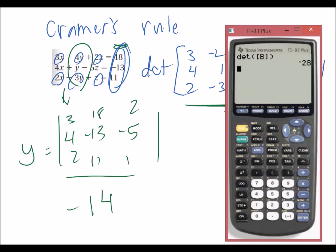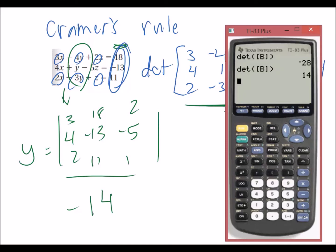Quit. Second matrix, math, determinant B. We get 14. So our answer is going to be 14 over negative 14. Our answer is going to be negative 1. And you're going to do the same exact thing for Z, except you're going to swap out the Z values with the solutions and solve the same exact way as this.